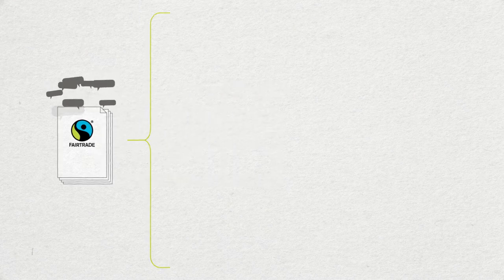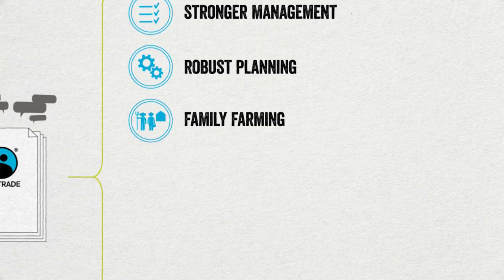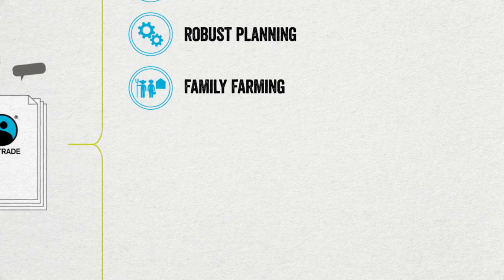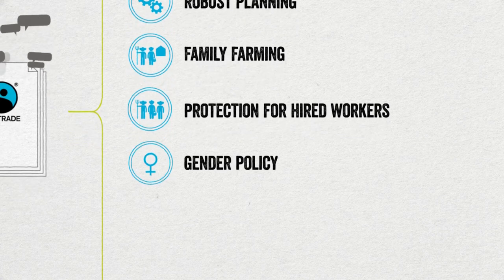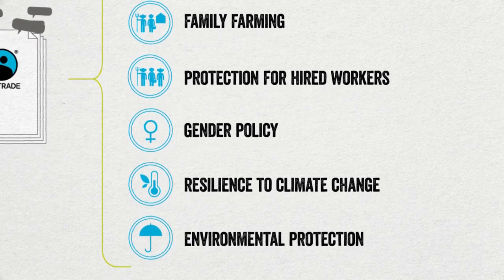Important changes include stronger management practices, more robust planning and transparency requirements, an increased focus on small-scale producers and family farming, greater protections for hired workers, a new gender policy, increased resilience to climate change and stronger environmental protection.